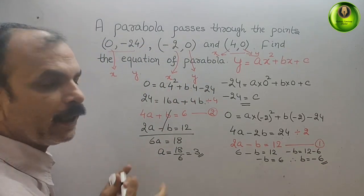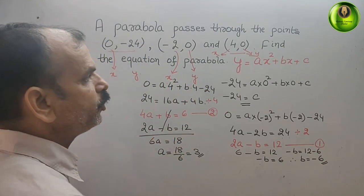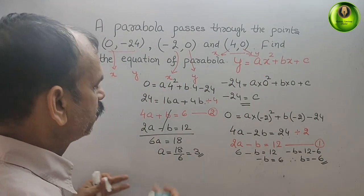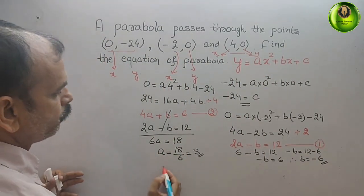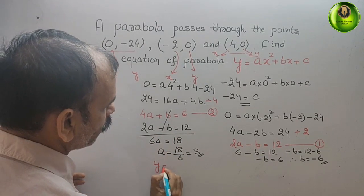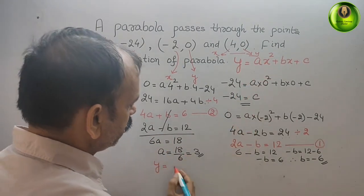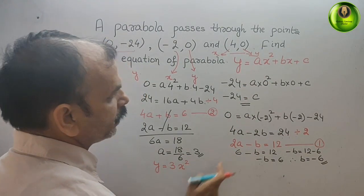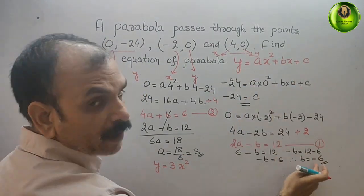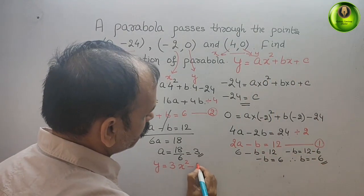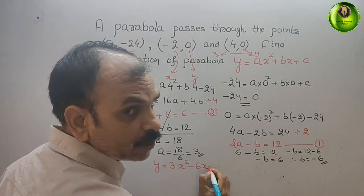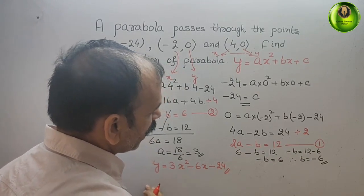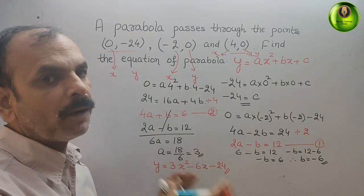Now substitute a, b, and c into the standard form. We get the equation: y = 3x² - 6x - 24. Therefore, this is the equation for the parabola.